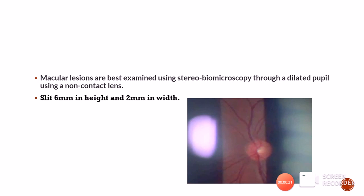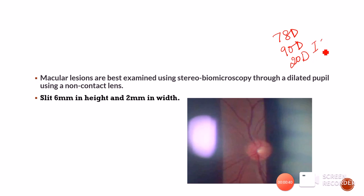The macular lesions are best examined using stereobiomicroscopy through a dilated pupil using a non-contact lens — either a 78 diopter lens, a 90 diopter lens, or a 20 diopter lens for indirect ophthalmoscopy. Macular examination is usually the most painful for the patient because we are directly focusing the light onto the macula, the most sensitive part of the retina. The slit height and width should be kept as minimum as possible.